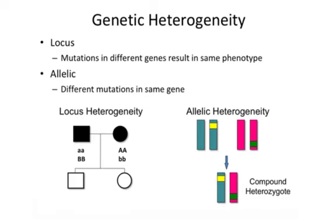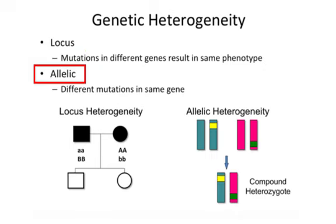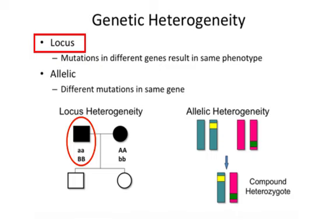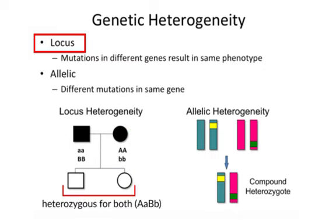Not all instances of consanguinity result in homozygosity for medically significant traits, and not all homozygosity is the consequence of consanguinity. We refer to genetic heterogeneity either as different loci responsible for a similar disorder, or different types of mutations in the same gene responsible for a similar disorder. An example of gene locus heterogeneity is where one parent is homozygous for the A gene and the other for the B gene — their offspring will be heterozygous for both but homozygous for neither, and hence unaffected. A common example would be hereditary deafness, where multiple different genes can be responsible, so children of two deaf parents can be heterozygous but not homozygous.